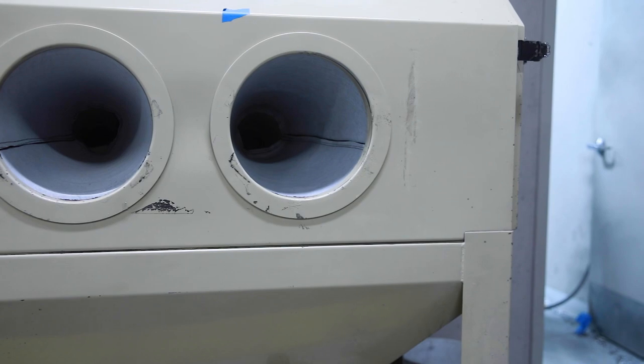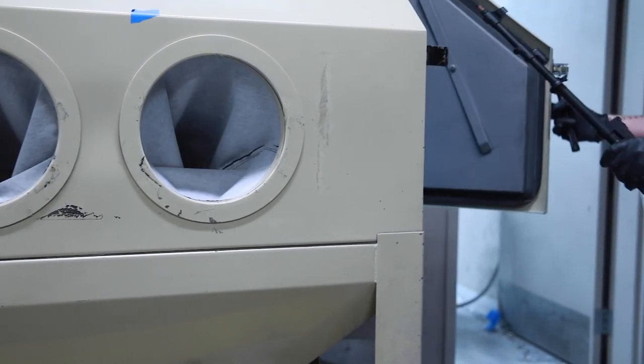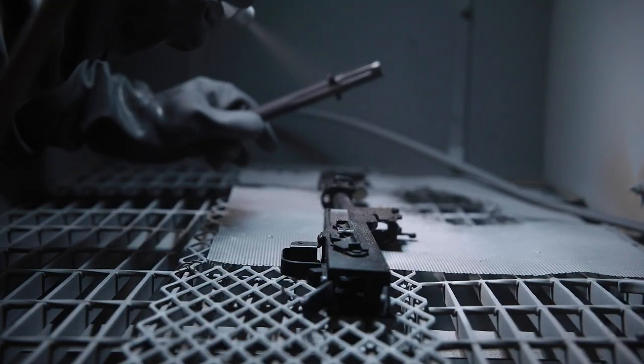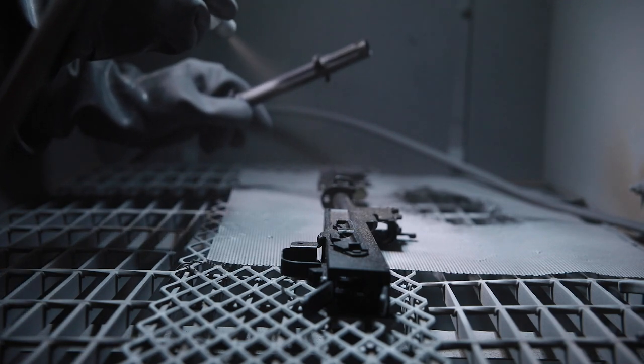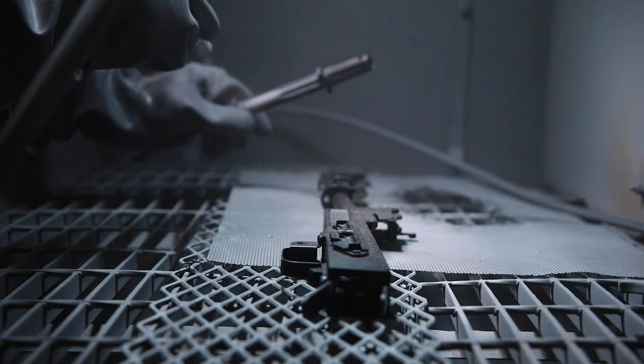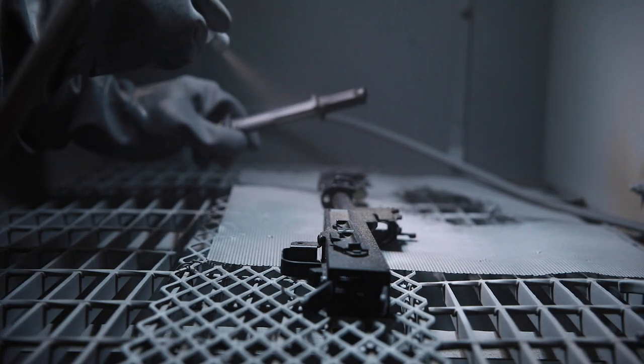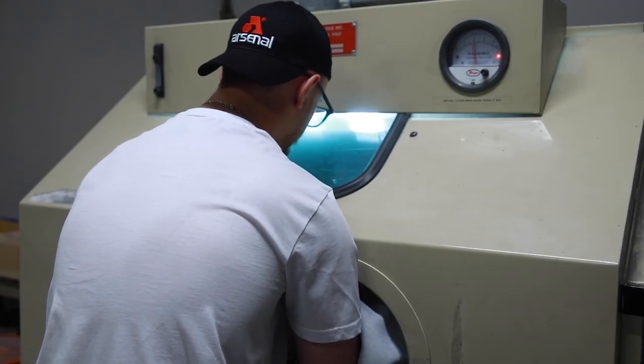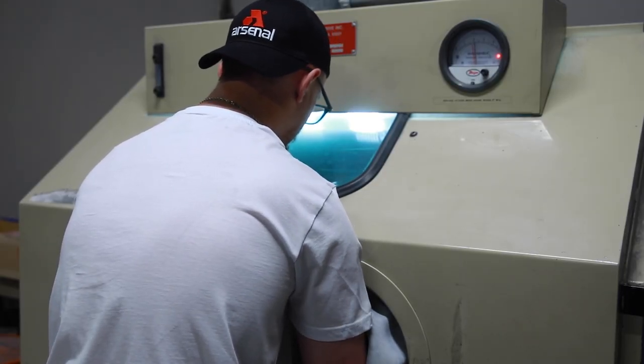Step 3: During the sandblasting process, we ensure that all areas requiring protection are masked off, including plugging the barrel. All existing coatings are removed from the parts, which provides a cleaner surface for the Cerakote material to adhere to.